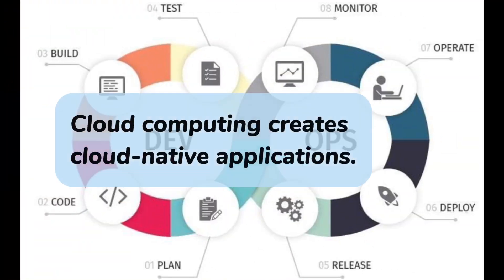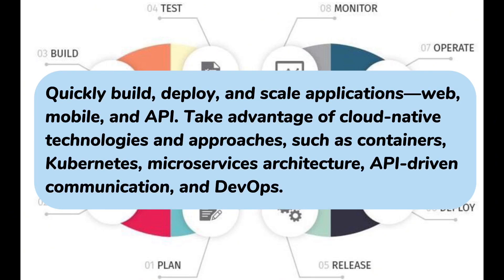Here are a few examples of what's possible with cloud services from a cloud provider. First, cloud computing creates cloud-native applications — quickly build, deploy, and scale applications: web, mobile, and API. Take advantage of cloud-native technologies and approaches such as containers, Kubernetes, microservice architecture, API-driven communication, and DevOps.